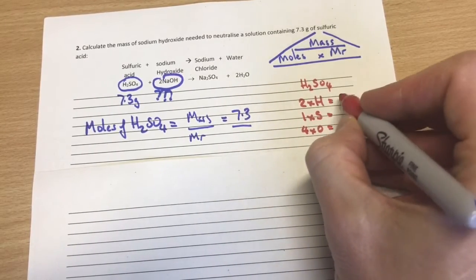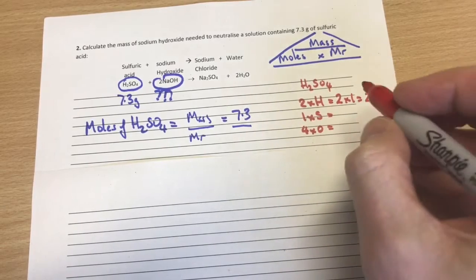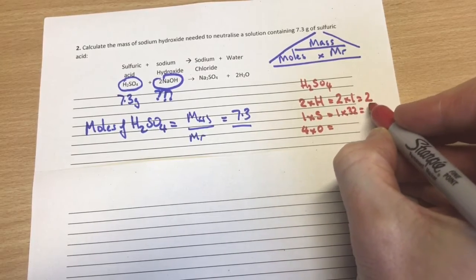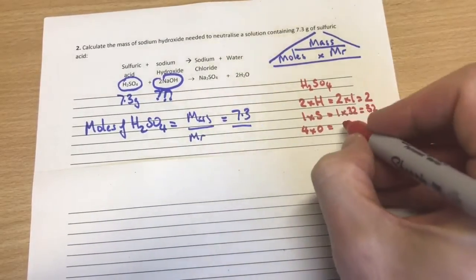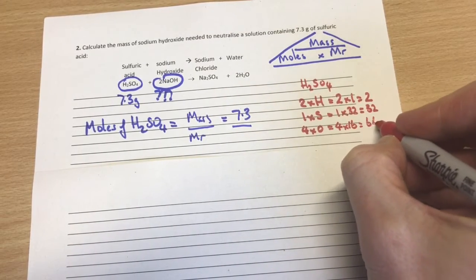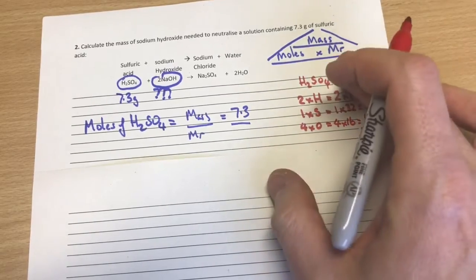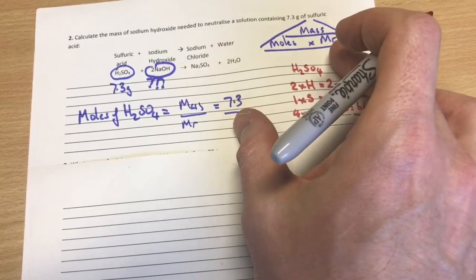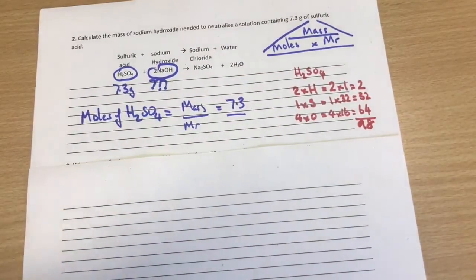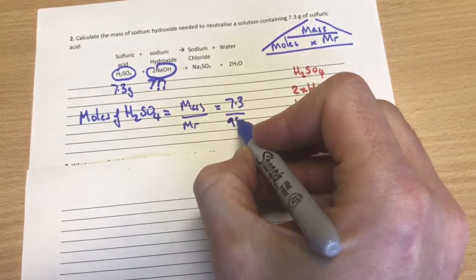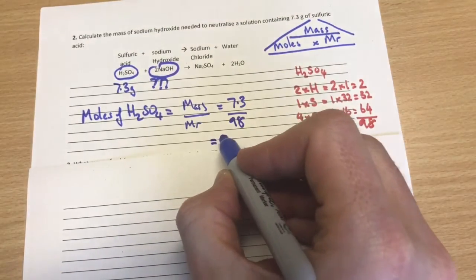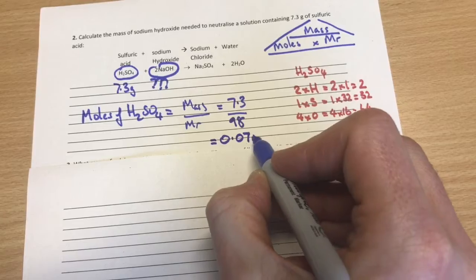Let's work out the mass of this now. So hydrogen's mass is 1, so that's going to be 2 times 1 is 2. Sulfur's mass is 32, so that's going to be 1 times that is 32. And oxygen's mass is 16, and we've got 4 times 16 which is 64. Add all that up together and that's going to give us a total mass of 98. So I can transfer that number now, 98, into here. So now I know it's 7.3 divided by 98. And when you work that out it gives you 0.07 moles.